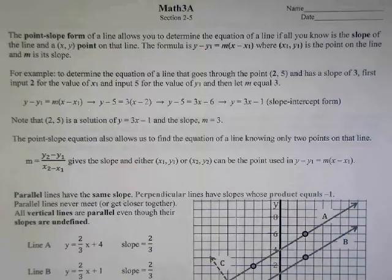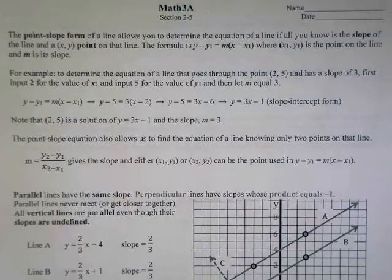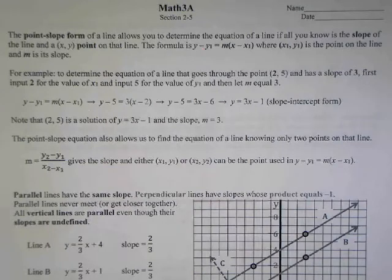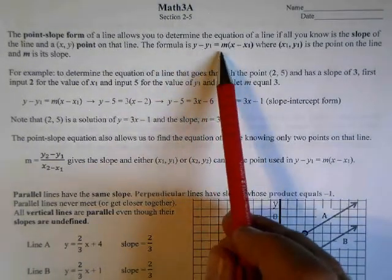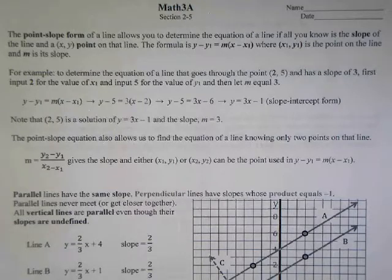Section 5 continues our work with slope. The first thing it does is give you another way of finding the equation of a line if you know the slope and any point on the line. Previously we used the y-intercept with y = mx + b, but now we have a slightly different formula: y minus y1 equals m times x minus x1, where (x, y) is any point on the line. It does not have to be where the line crosses the y-axis, and then we can simplify to find the equation of the line.